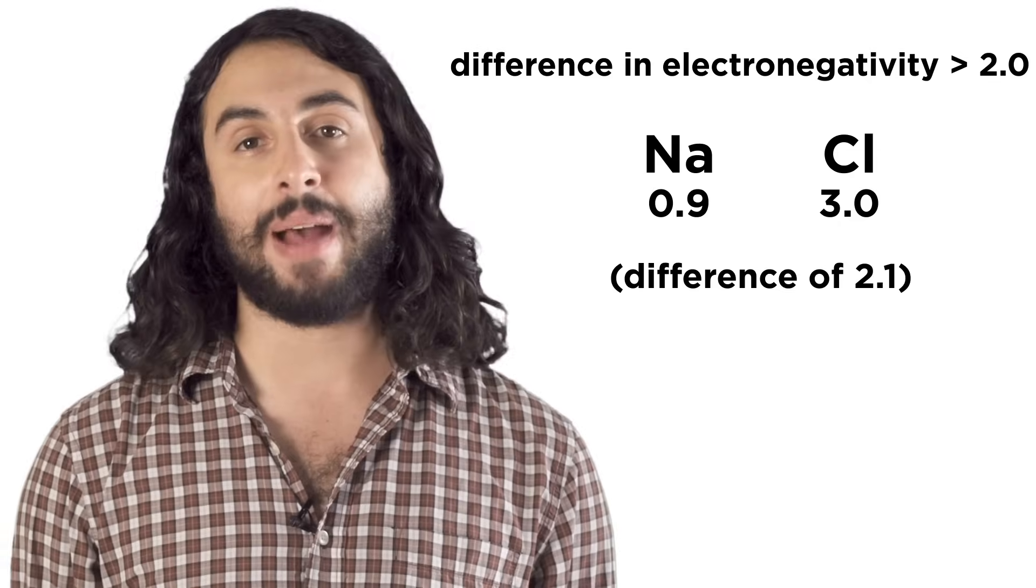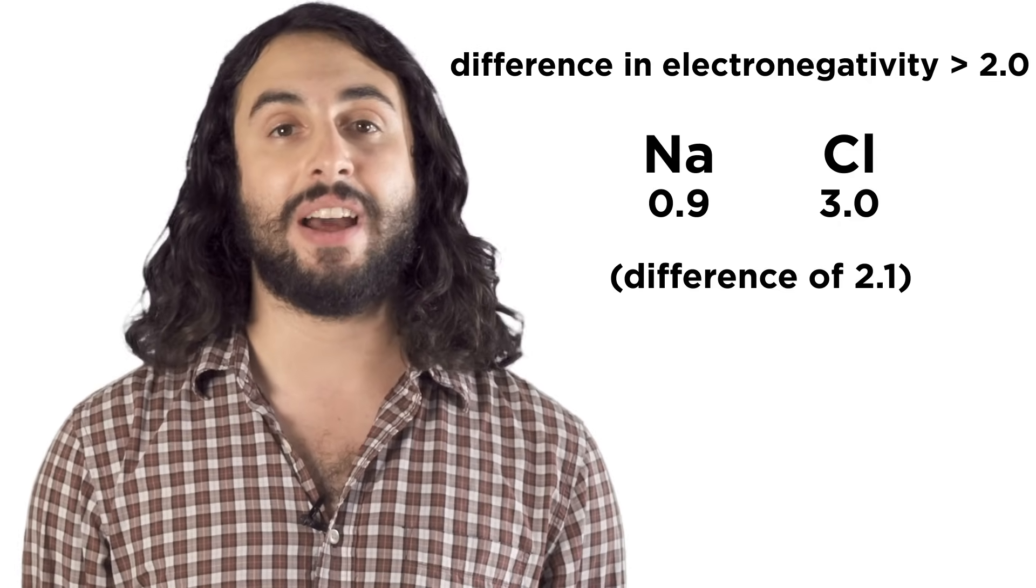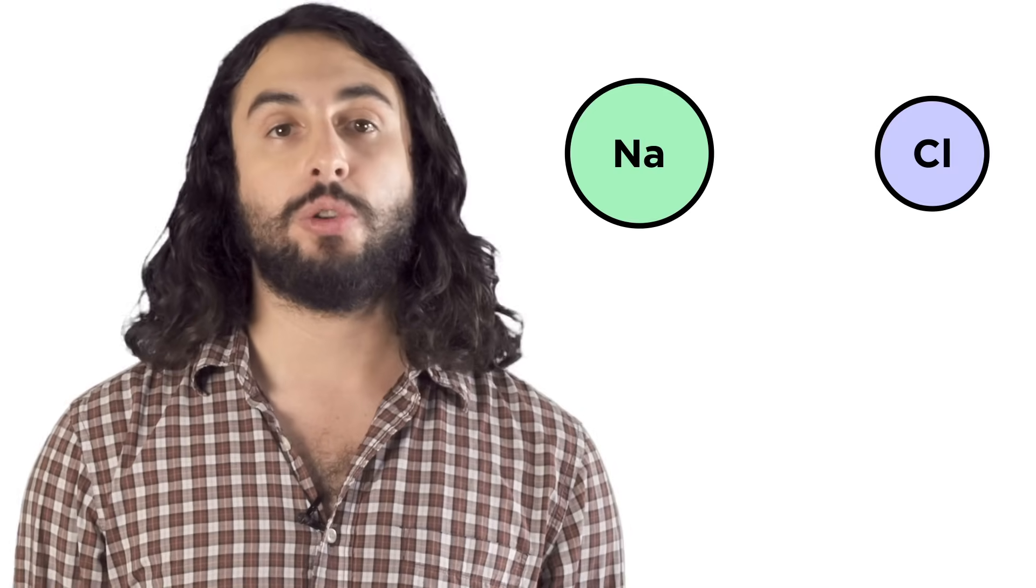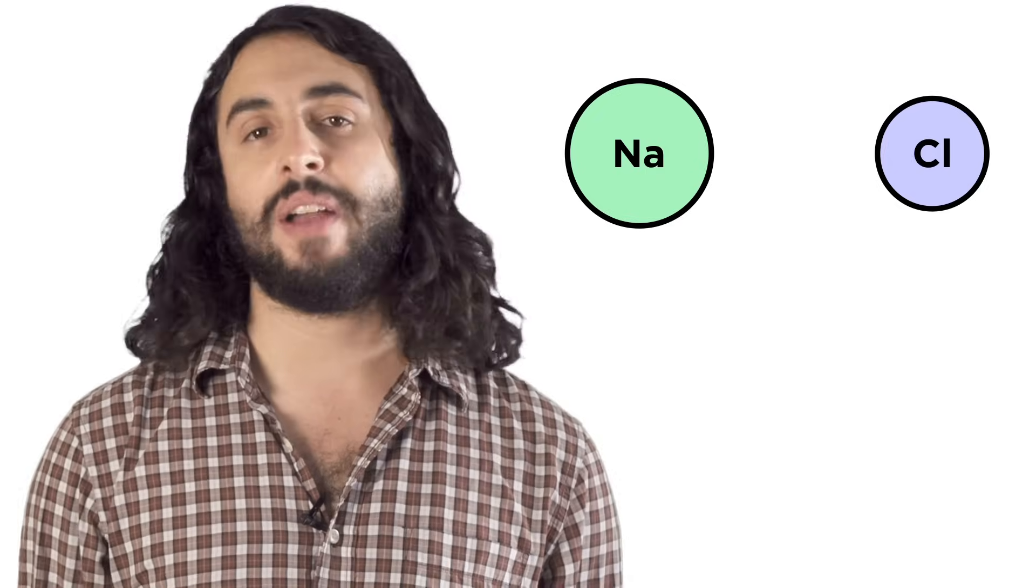If the difference is more than about 2.0, like with sodium and chlorine, chlorine will steal an electron from sodium. Chlorine really wants another electron, sodium really wants to get rid of one, so everybody wins.